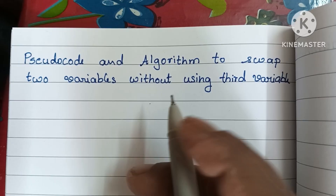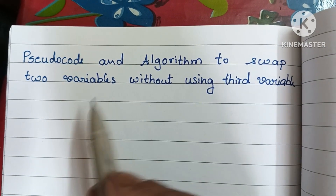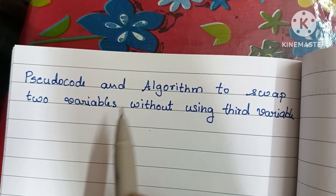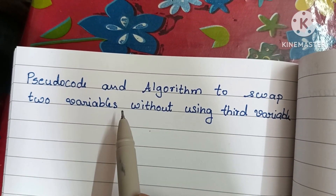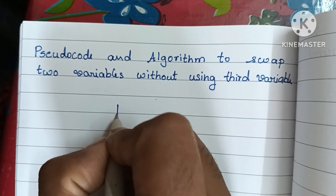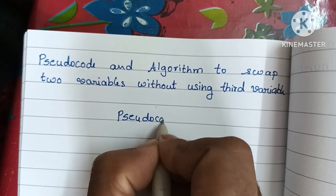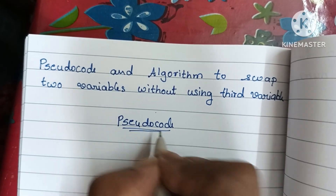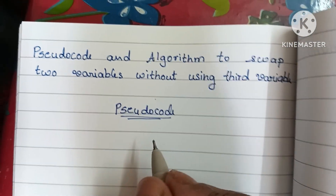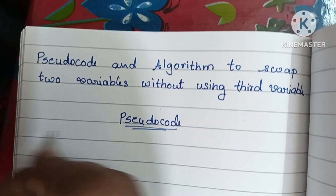In this video we're going to learn how to write pseudocode and an algorithm to swap two variables without using a third variable. First we're going to write pseudocode. Pseudocode is a detailed description of a solved problem in a user-readable form, written in natural language like English.